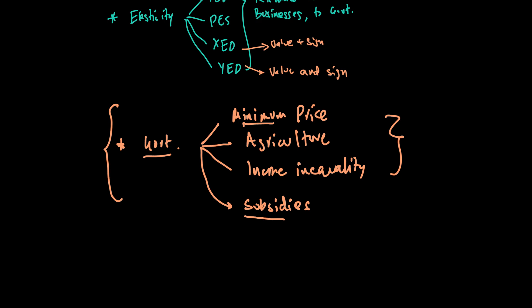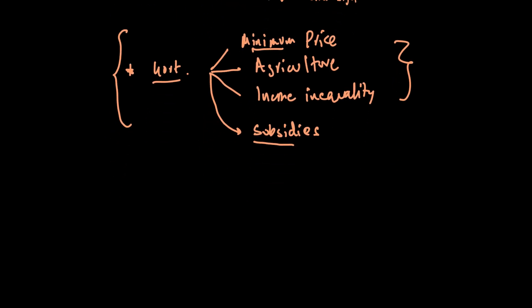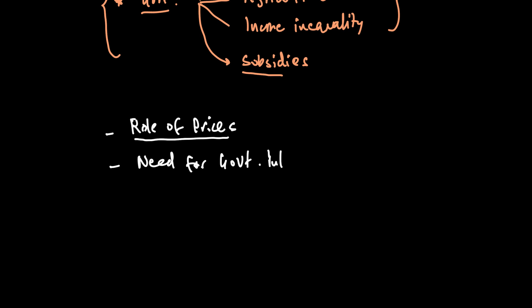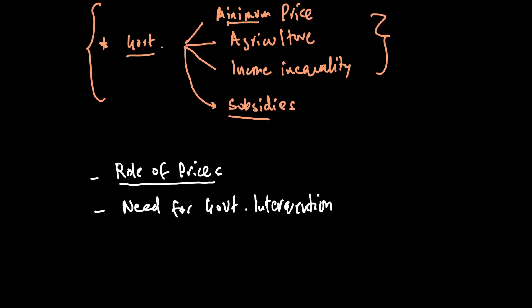Another topic to be safe that you should look at and prepare is the role of prices and the need for government interventions. Remember the role of prices covers signaling, incentive and rationing. So those are my key topics for micro that I really want everyone to prepare. It's based on my guesses from what I've seen tested in the last three to four papers and what could possibly come in the exam. That's it for micro — let's now look at macro.